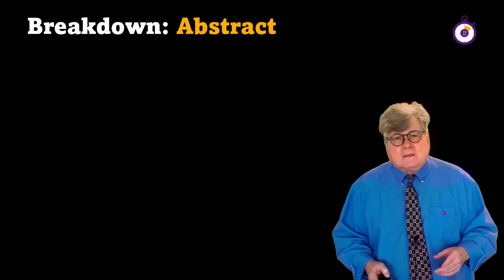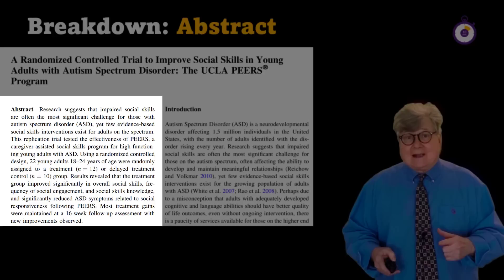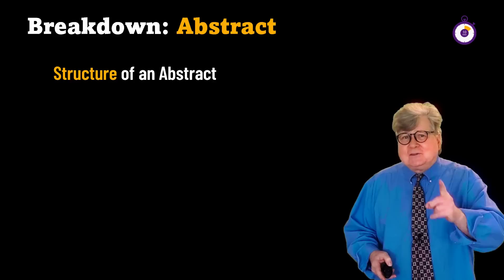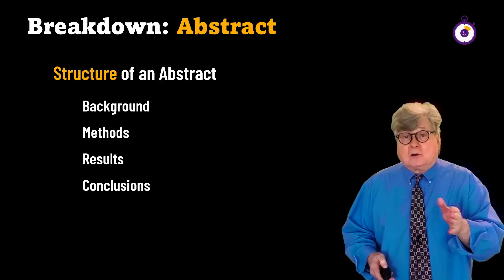The next part is the abstract. The abstract distills the entire article for you — it's actually a miniature version of the entire article, just without the details. As a result, the abstract has the same exact parts as the main article: background, results, methods, and conclusions. You can divide abstracts into those four parts just like you can the main article.